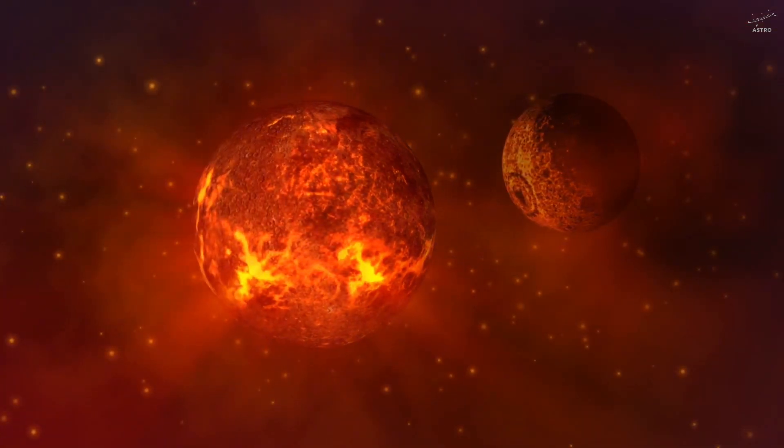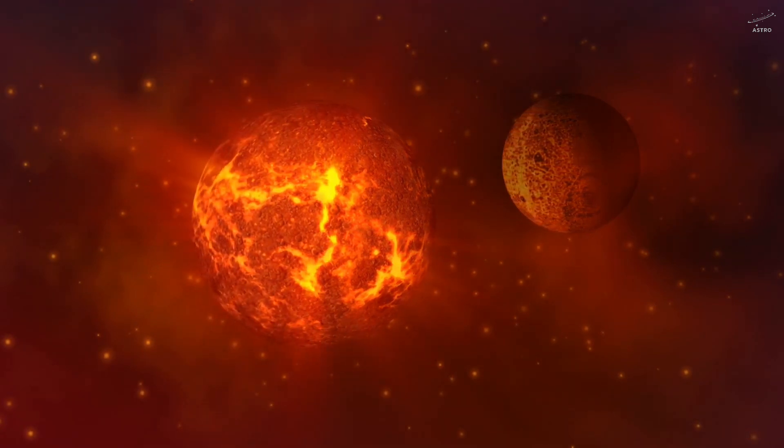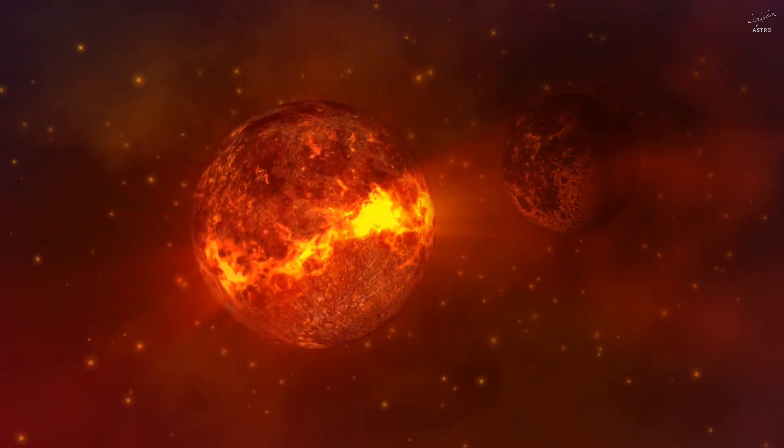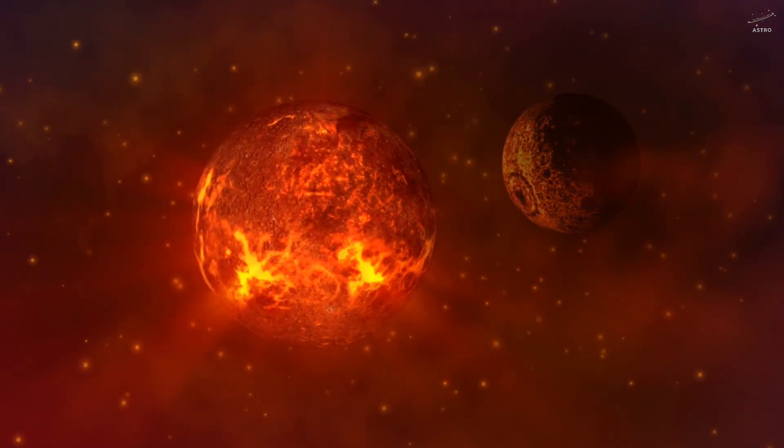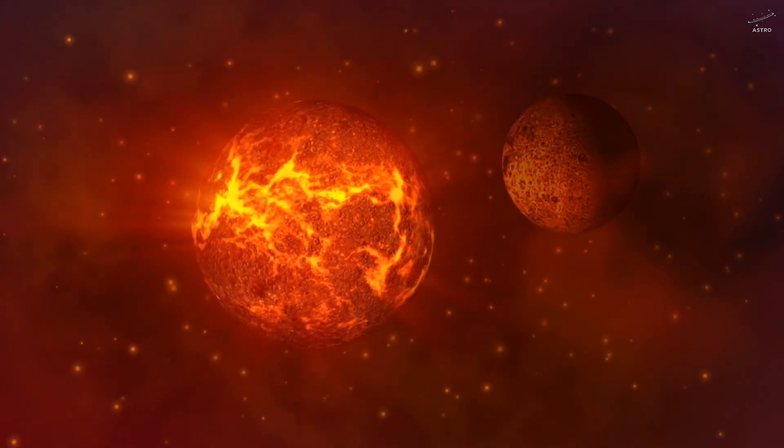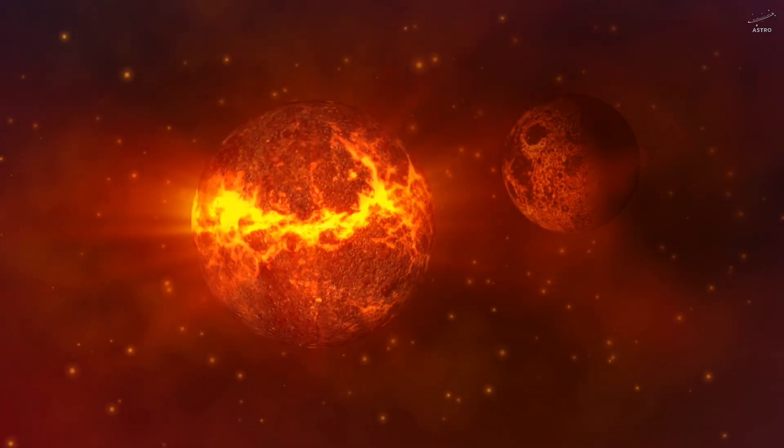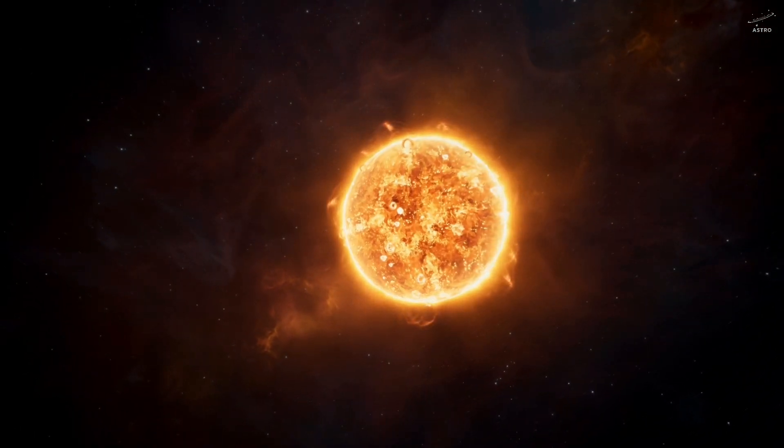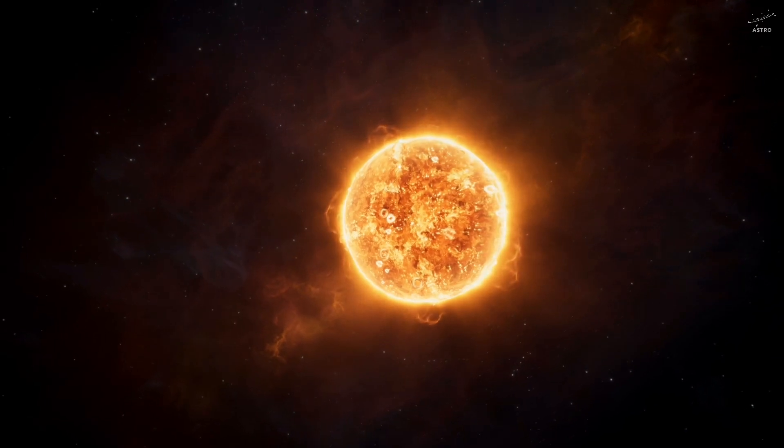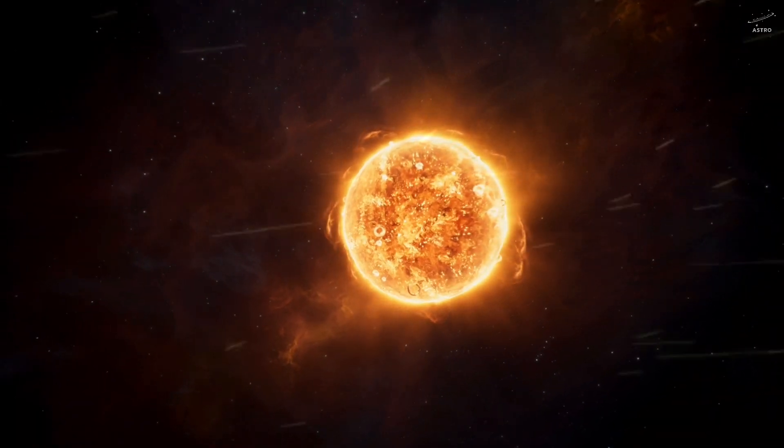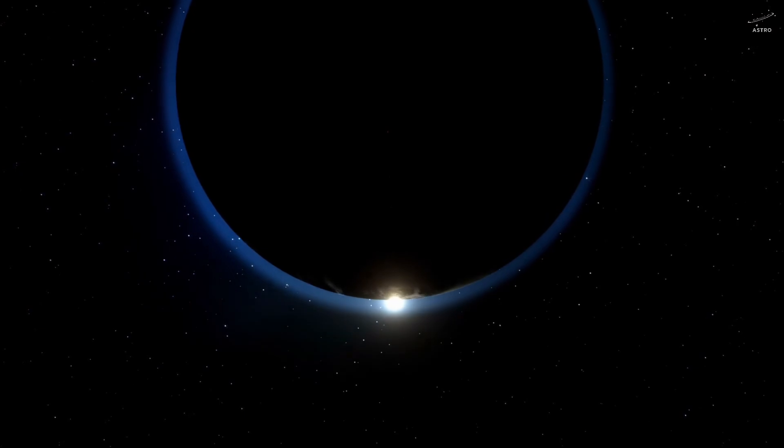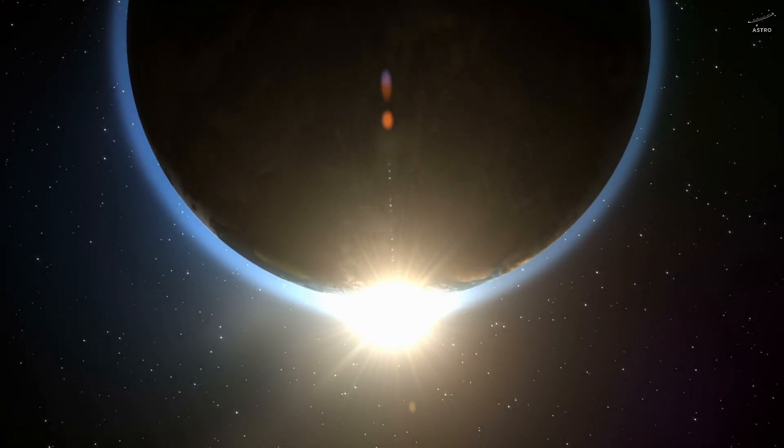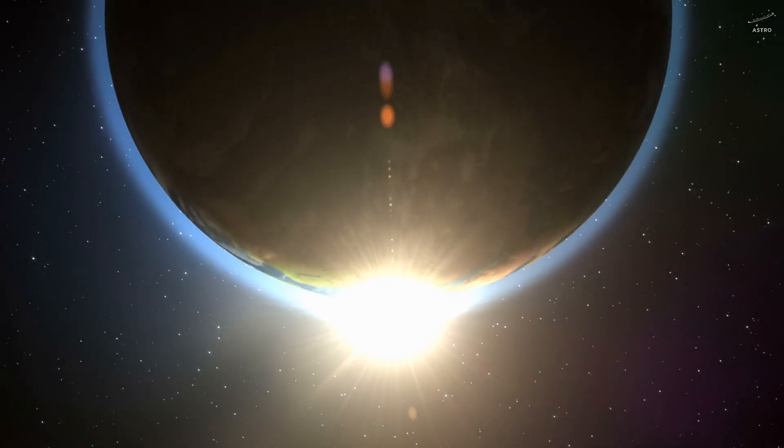But imagine if things had unfolded differently. What if the original cloud had split into two dense cores instead of one, we might have ended up with a binary star system. Two suns dancing around each other, pulling planets into chaotic orbits. And systems like that, they aren't rare in the universe. But here's the catch. They're far less likely to offer the stable conditions needed for life to emerge. Maybe, just maybe, the sun's solitude was a rare cosmic gift. The quiet stage Earth needed to nurture life.